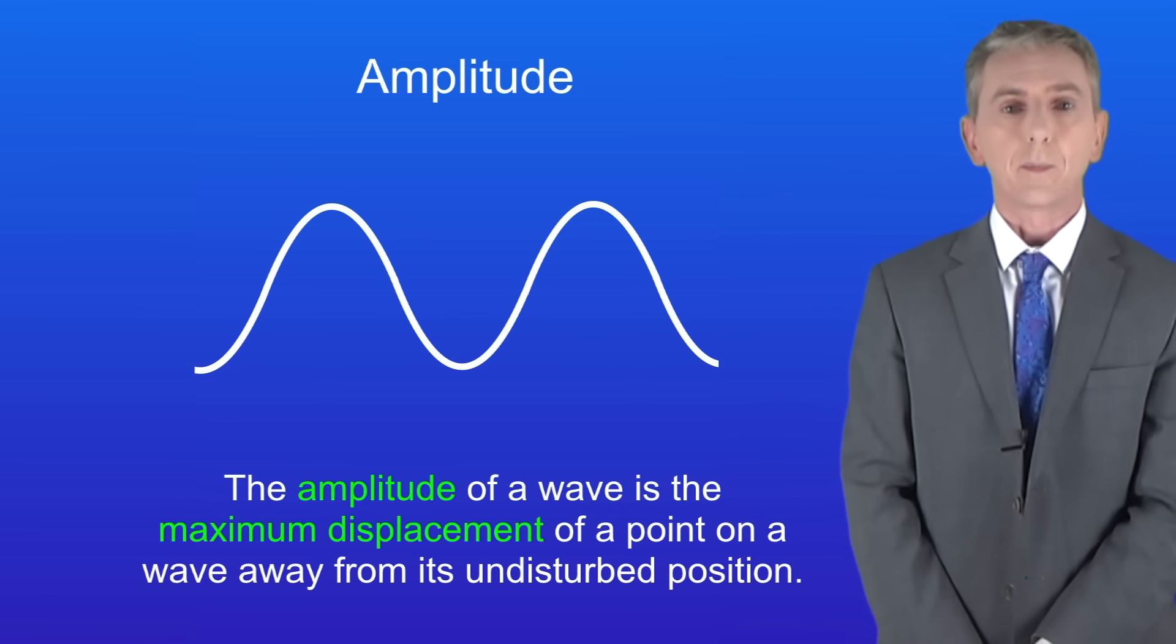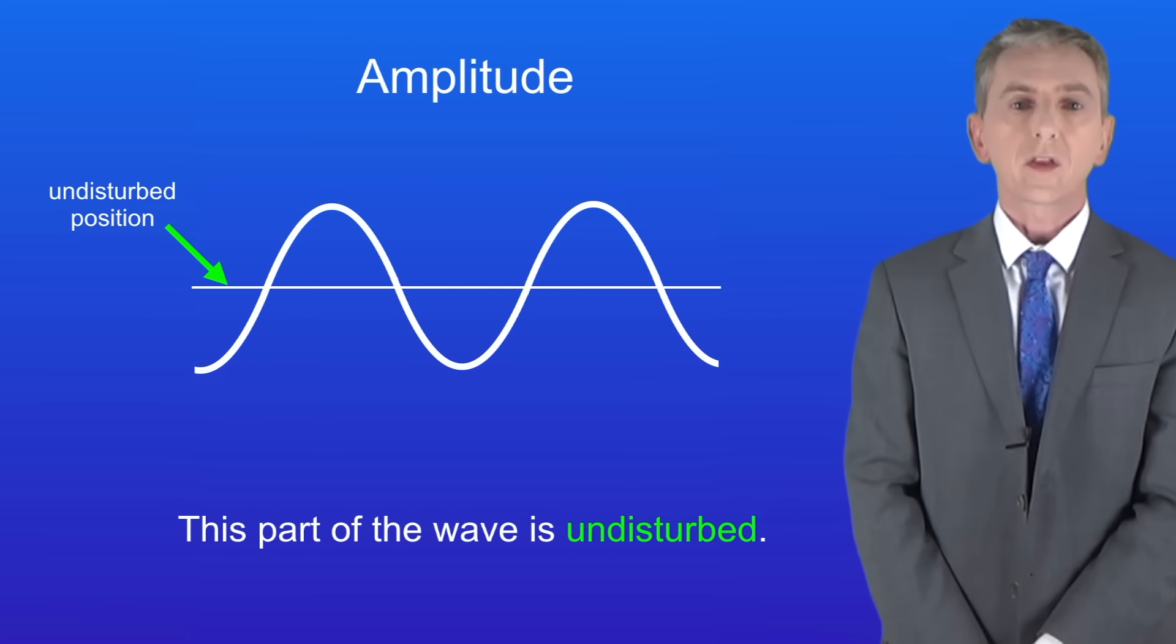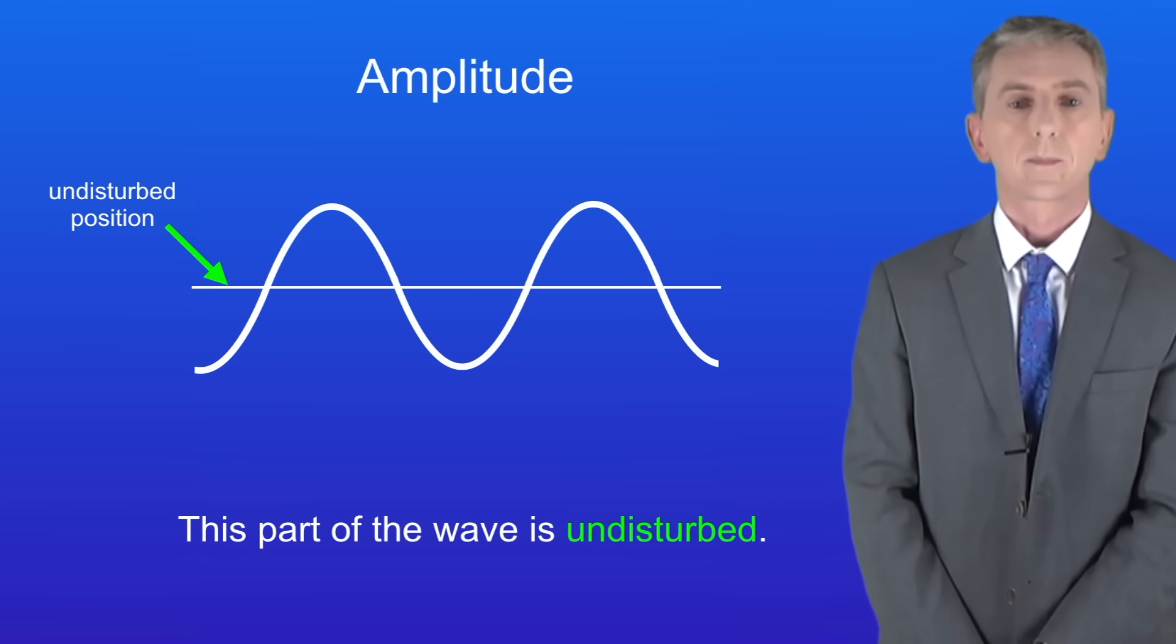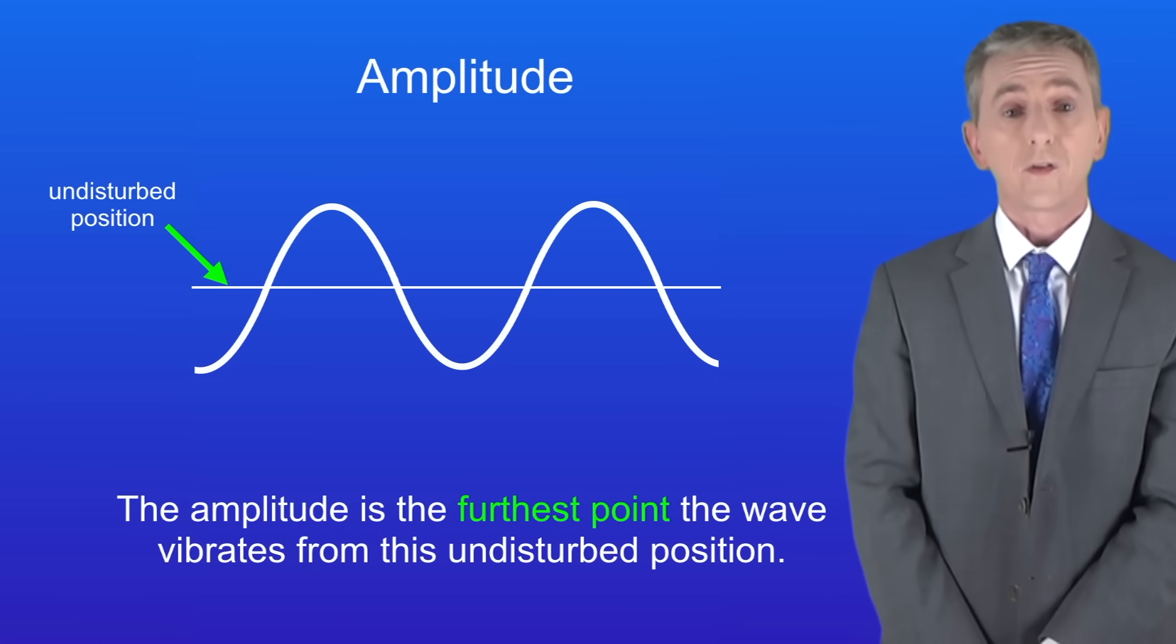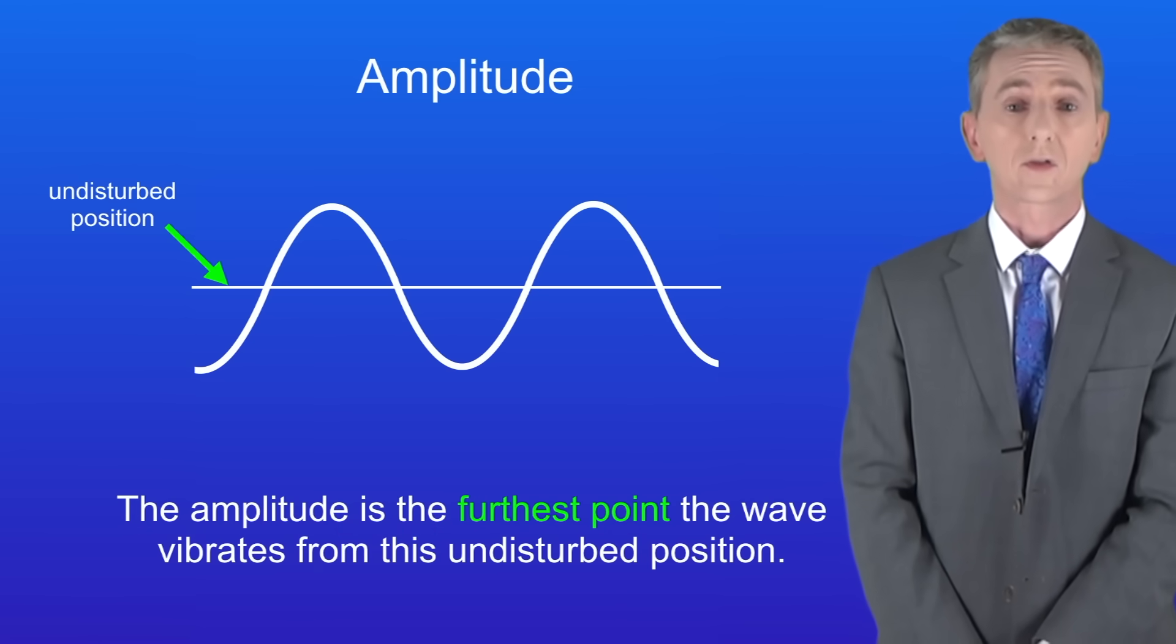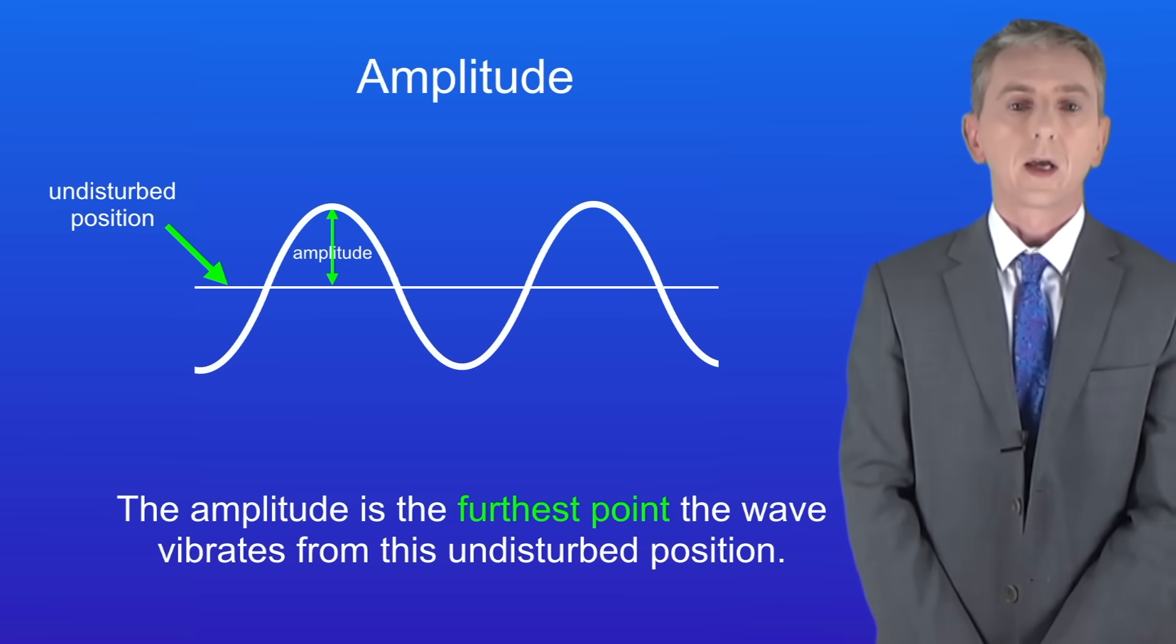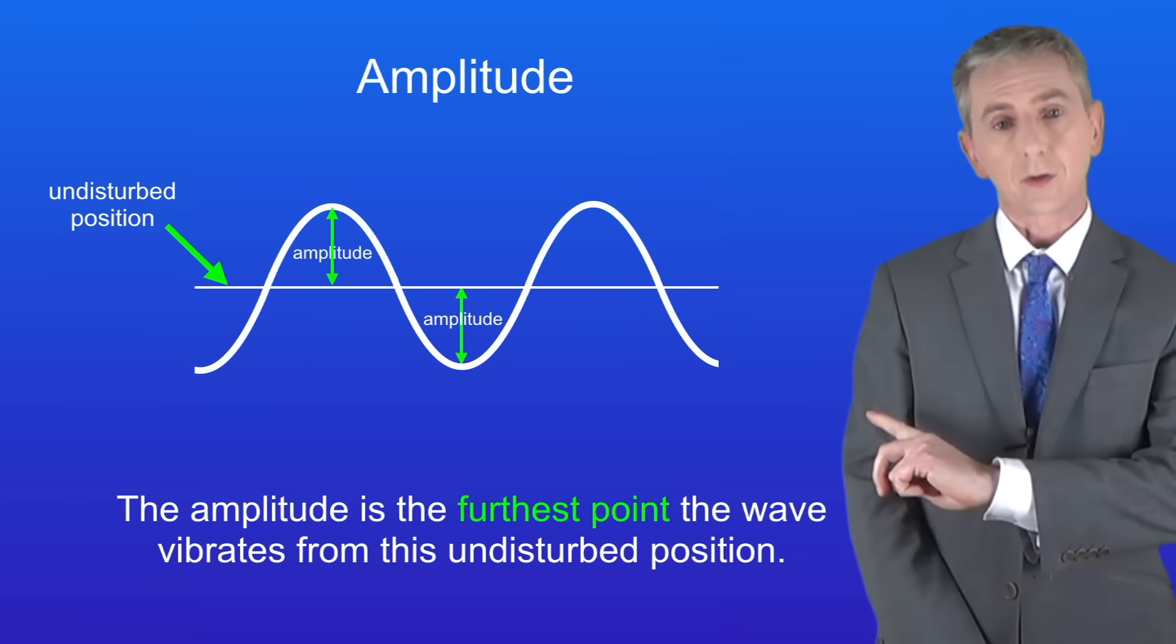So what does that actually mean? If we look at the wave, we can see a point in the center where the wave is not moving, and I'm showing you that here. This part of the wave is undisturbed. The amplitude is the furthest point the wave vibrates from this undisturbed position. So this is the amplitude, and also this is the amplitude.